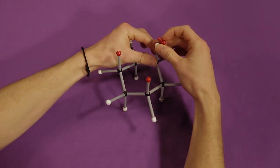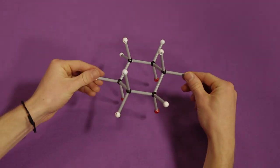You can use different colors for axial and equatorial hydrogens to make it easier to visualize.